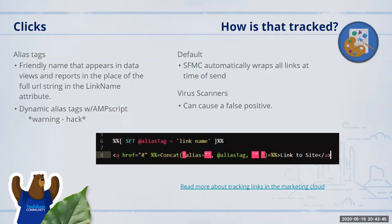SFMC automatically wraps all links at time of send. Let's talk about false positives for virus scanners. If you see an email that has been scanned, you'll know because every single link in that email will be counted as a click in your reports. You can start to recognize the domains that scan for viruses and build your own suppression list so that you can query those out in your reports whenever you recognize the domains that are using virus scanners.